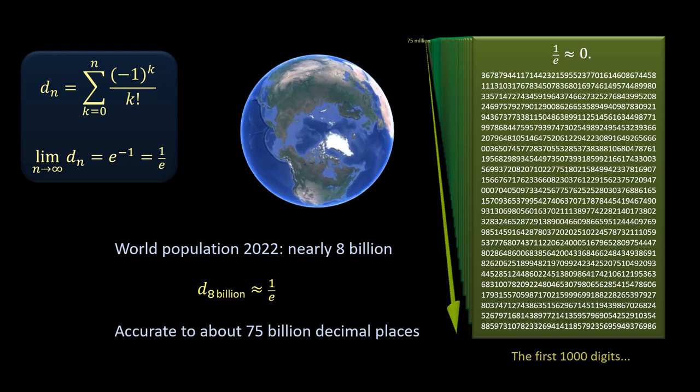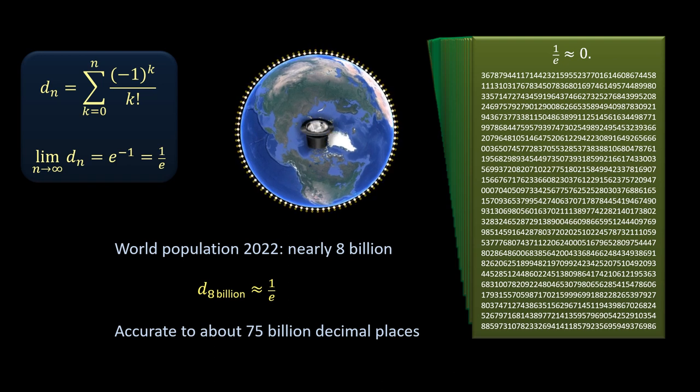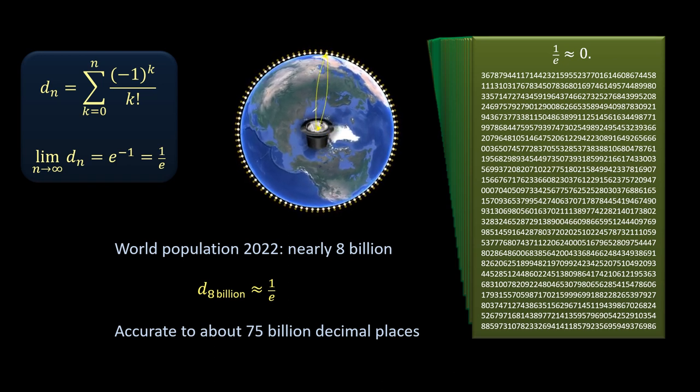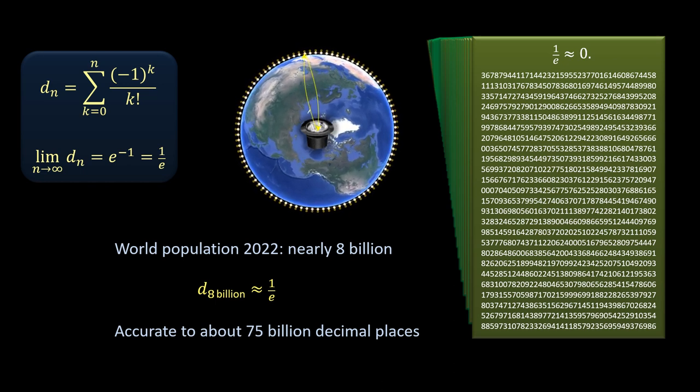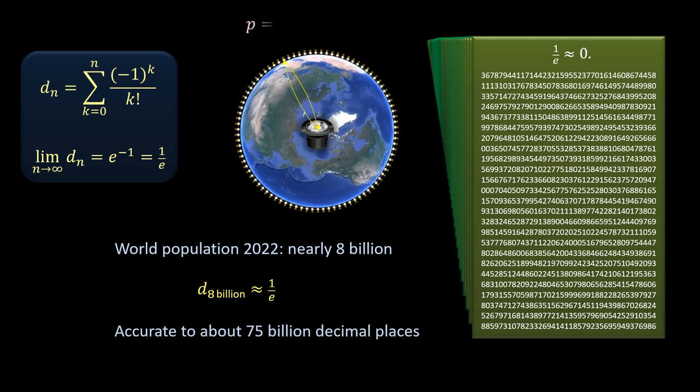That means we could fill up 75 million more of those boxes before the decimals start to diverge from the expansion of 1 over e. So if we were to play Secret Santa with all the people on Earth, the odds that at least one person would miraculously draw their own name would not be that miraculous at all.